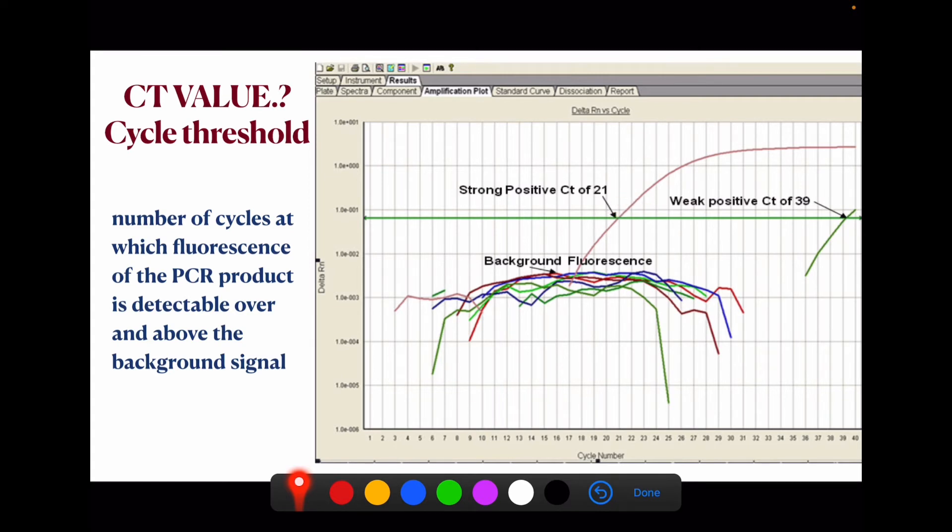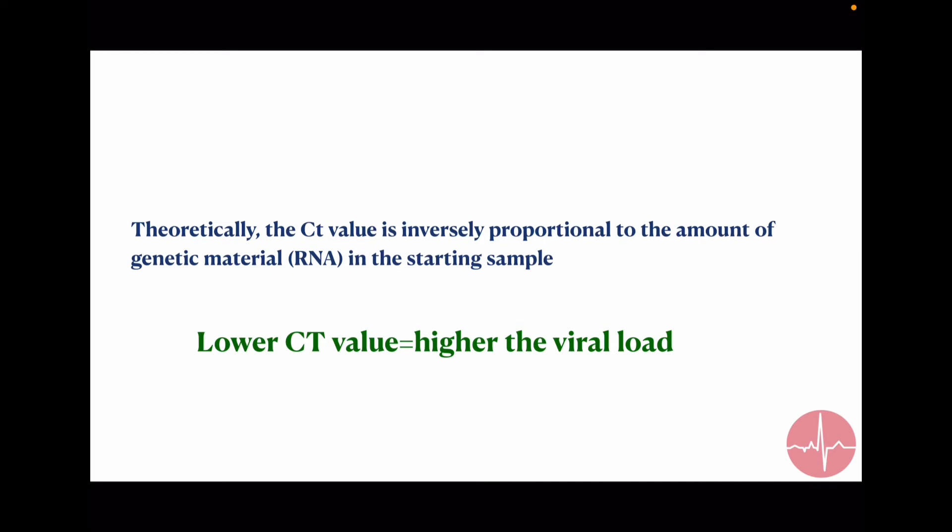In another example we can see that after 39 PCR cycles we detect this level. So theoretically we can say that the CT value is inversely proportional to the amount of genetic material in the starting sample.